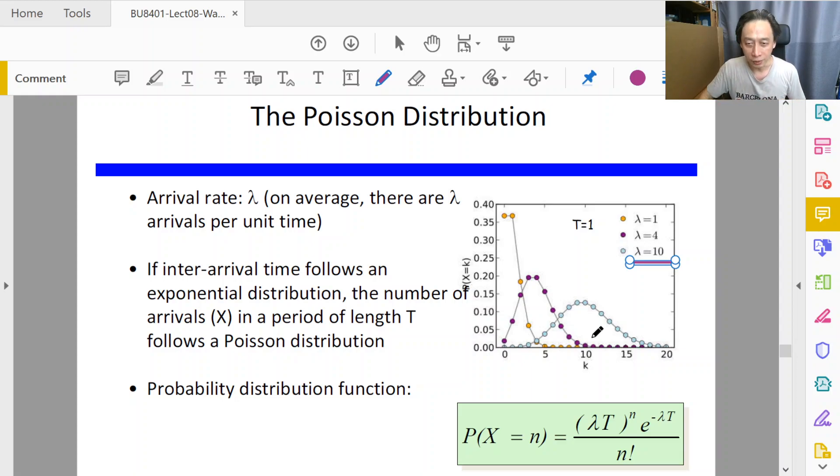So for 10 customers coming into the bank on an hourly basis, is that frequent? Well, it's the most frequent in the case of this light blue curve, but it is not frequent at all in the case of the purple curve whose average arrival rate is four.